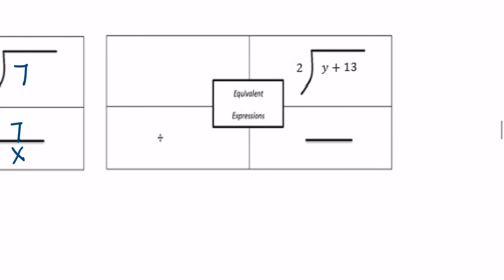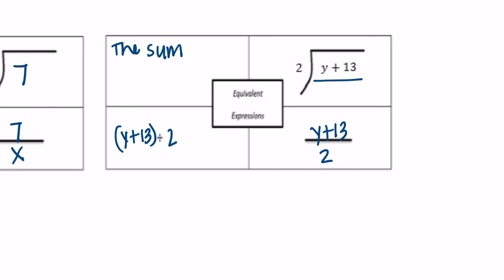And the last one, we have y plus 13 divided by 2. So let's write y plus 13, I'll put them in parentheses, divided by 2. Or y plus 13 over 2. Or we could say the sum of y and 13 divided by 2.